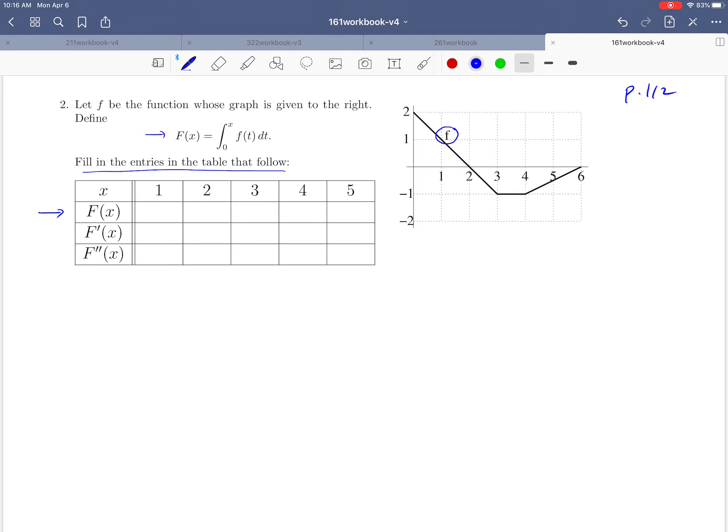Starting with the first x value of 1, capital F(1) by definition is the integral from 0 to 1 of f(t)dt. Remember that graphically, integrals represent areas. This integral from 0 to 1 is the area under our curve f. Between 0 and 1, each square is one by one, so the box has area 1, plus the triangle has area 1/2. Adding those together gives 1.5 for F(1).